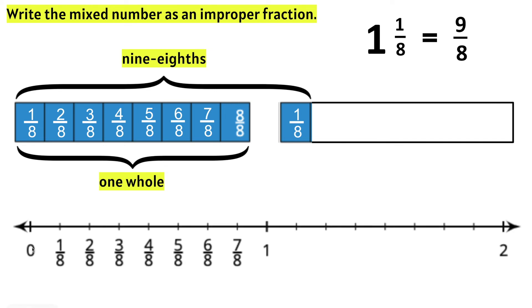We notice that this number line has 0 to 1 whole. We know that 1 whole would be 8/8, but we still need 1/8. We know if we go one tick mark past the 1 whole, we will be at 1 whole and 1/8.